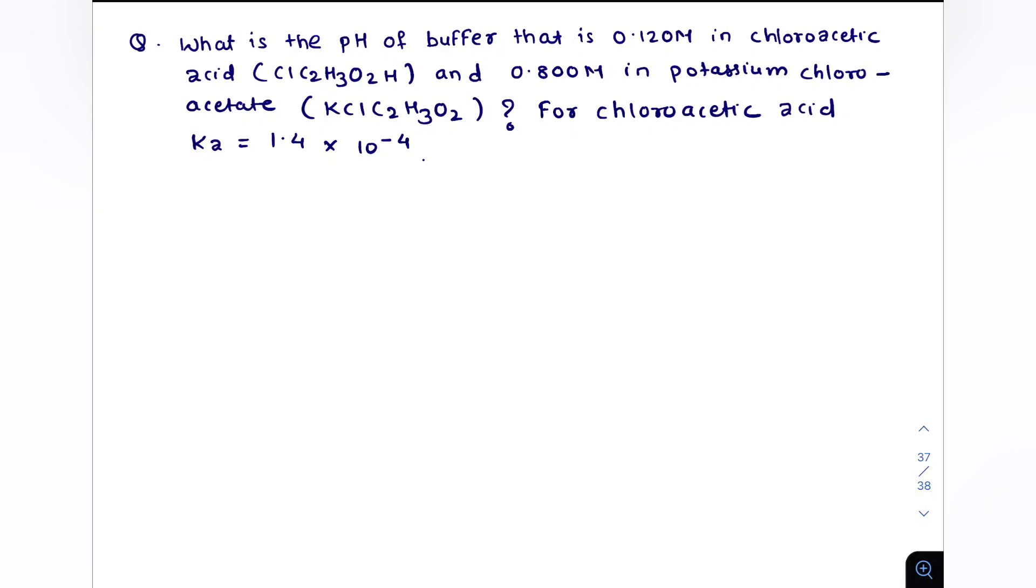Welcome everyone. So today we have a question: what is the pH of buffer that is 0.120 molar in chloroacetic acid and 0.800 molar in potassium chloroacetate? For this we have Ka for chloroacetic acid is 1.4 × 10⁻⁴.